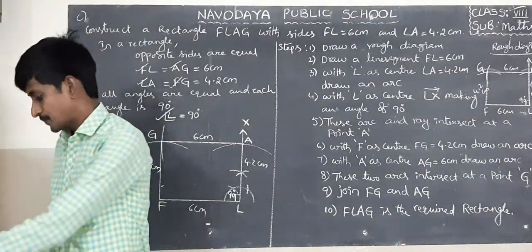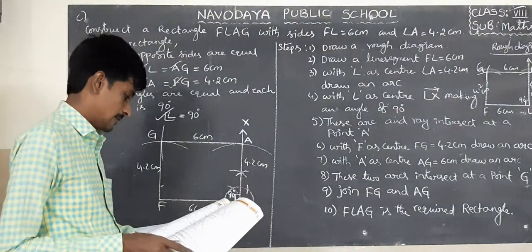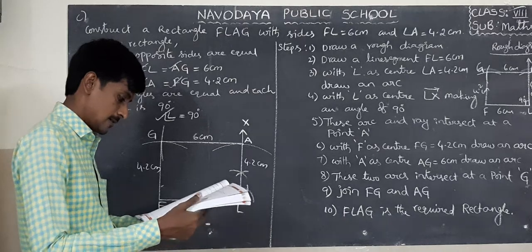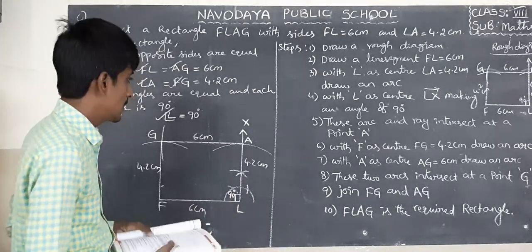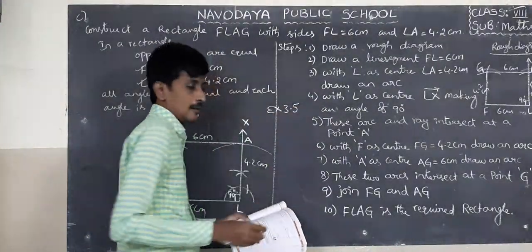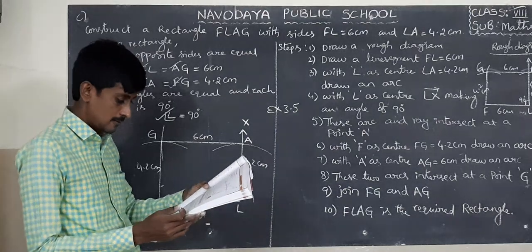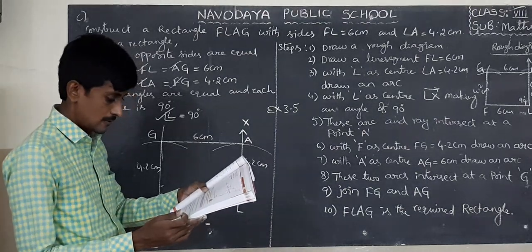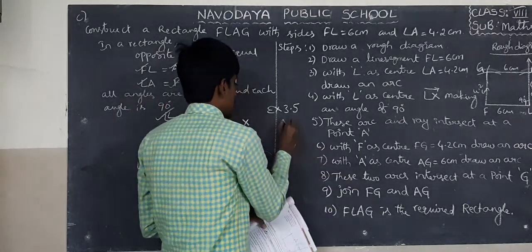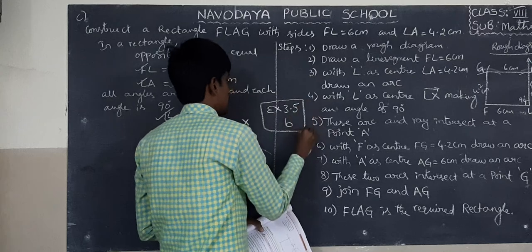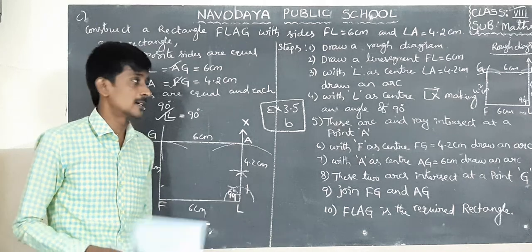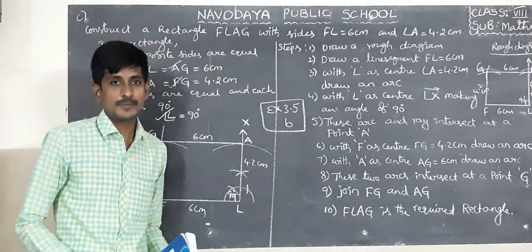Therefore, FLAG is the required rectangle. This completes the construction with the given measurements. Exercise 3.5 will be explained later. Thank you students — tomorrow we will discuss exercise 3.5.